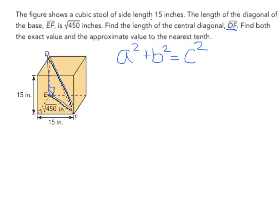So here I'm going to plug in what we have. We have a side length of 15 and the square root of 450. So I have 15² + (√450)² = DF².